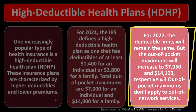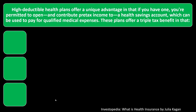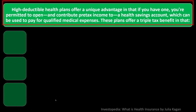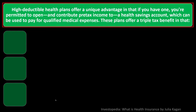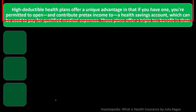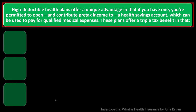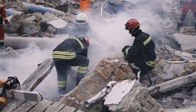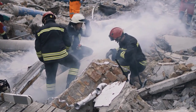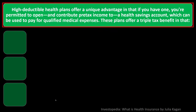Out-of-pocket maximums don't apply to out-of-network services. High deductible health plans offer a unique advantage: if you have one, you're permitted to open and contribute pre-tax income to a health savings account (HSA), which can be used to pay for qualified medical expenses. This comes into play because the law has skewed health insurance toward covering preventative care, and the HSA is a way to incentivize that preventative coverage.